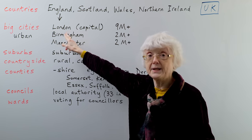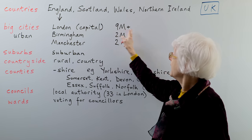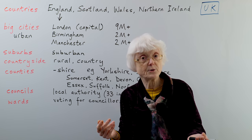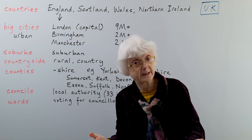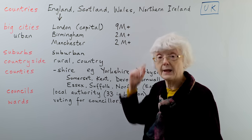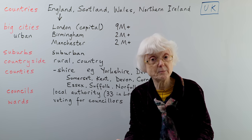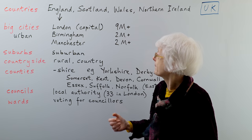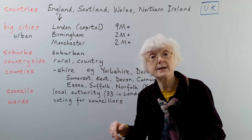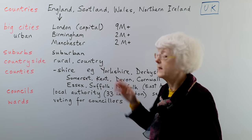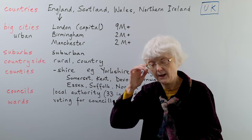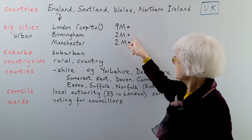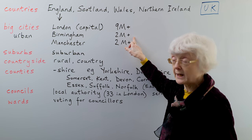The big cities: London is the capital, and the population is currently in 2021, as we're filming this, over nine million people in London. Then another big city is Birmingham in the Midlands — about maybe a hundred miles north of London. That has over two million population.